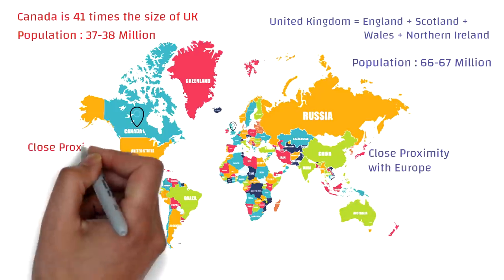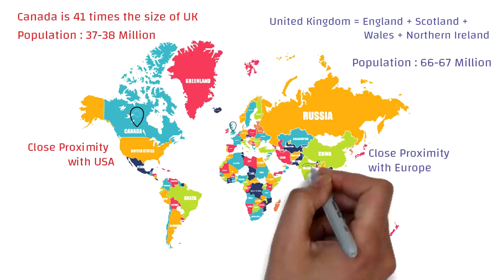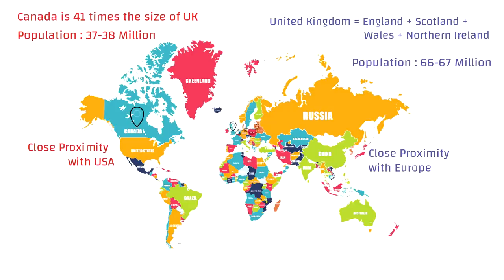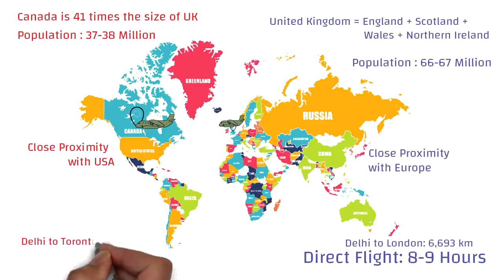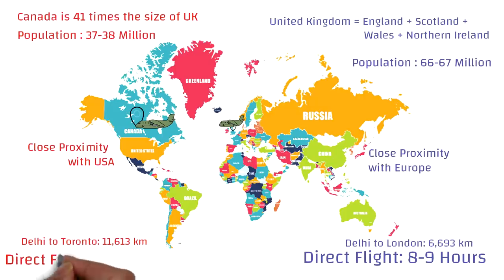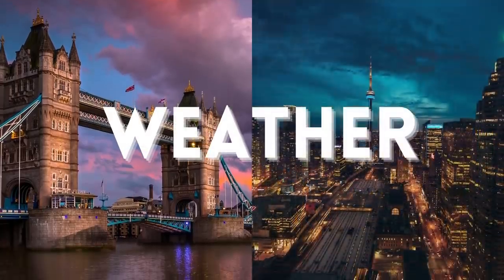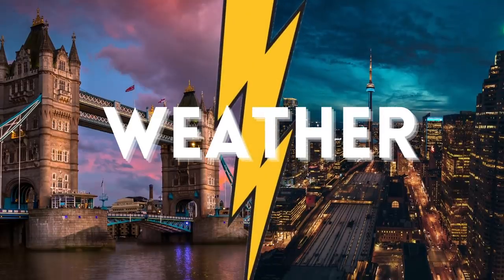If you're in UK, you have the benefit of its proximity with Europe, while if you're in Canada, you have the benefit of its proximity with the US. For example, if you're planning to immigrate from India — say Delhi to London — the distance is around 6,700 km, so a direct flight takes around 8 to 9 hours. From Delhi to Toronto, the distance is around 11,600 km — nearly double — so a direct flight takes around 13 to 14 hours.